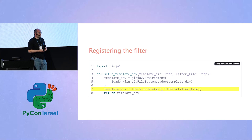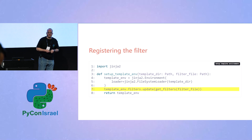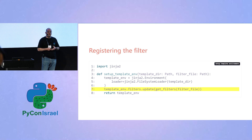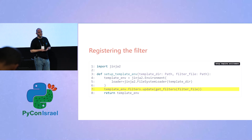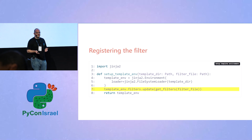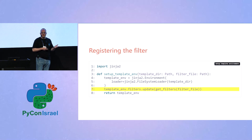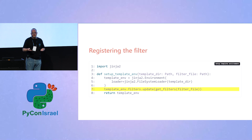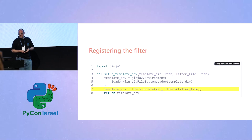The second part is registration — providing the application the information so it can actually run our code. Jinja has the notion of a Jinja environment. When you apply data to a template, you create a Jinja environment that contains a dictionary of filters. By providing a name-callable pair, we can update that dictionary and register our new custom filters.